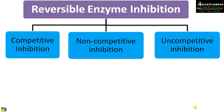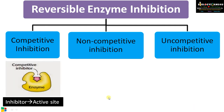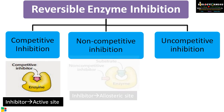Now let us discuss the most important concept in differentiating these three types of enzyme inhibition. In the case of competitive inhibition, the inhibitor binds to the active site of the enzyme. The inhibitor is a substrate analog having a similar structure to the substrate, so it competes for the active site with the natural substrate. That is why it is called competitive inhibition.